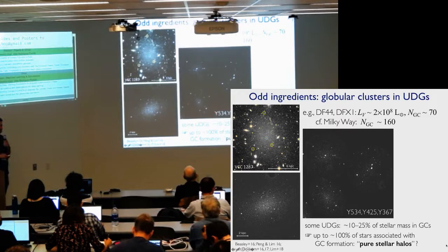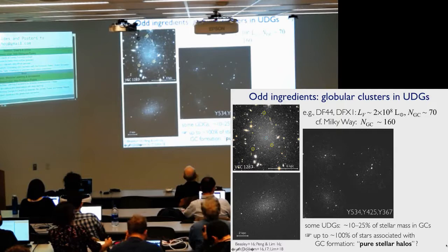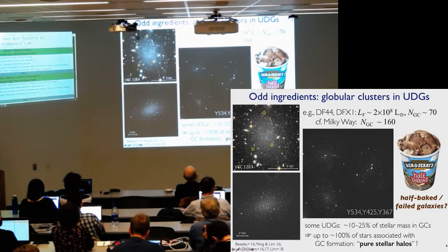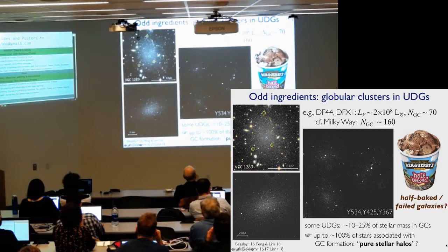So up to a quarter of the stellar mass today is in globular clusters. And if you consider various disruption effects over cosmic time, you could have a hundred percent of their stars associated with globular cluster formation at some higher redshift. And think of these as possibly pure stellar halo galaxies that never formed the normal stellar populations. So I'll call this half-baked, in honor of Santa Cruz. I thought we would call it that. So these are literally half-baked galaxies. They haven't completed forming all their regular components.